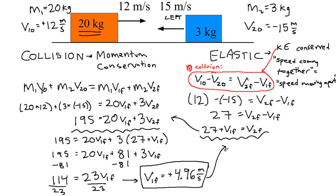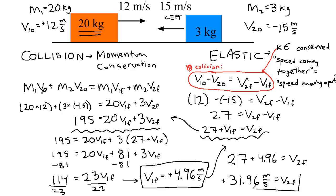Plugging v1F = 4.96 back in: v2F = 27 + 4.96, so v2F ≈ 31.96 m/s. The smaller block has gone zooming away, also to the right, at almost 32 m/s. Elastic collisions tend to produce much faster final velocities than we expect from most other collision types.